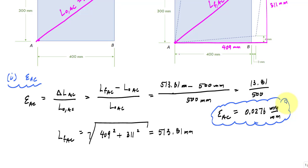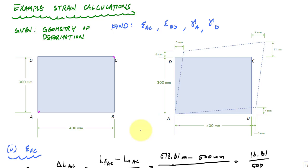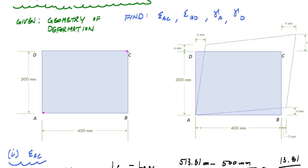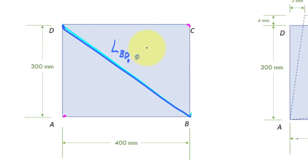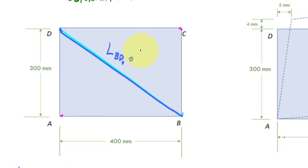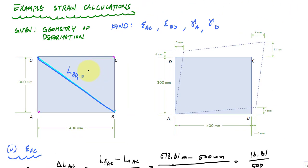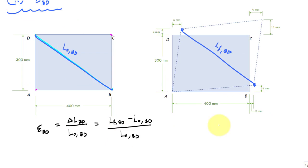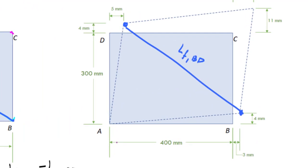BD originally has a length of 500 millimeters as well, also from the 3-4-5 triangle. The final length of BD goes from one deformed corner to the other. We know the original length is 500 millimeters, and now we need to do some geometry to figure out the final length of BD.